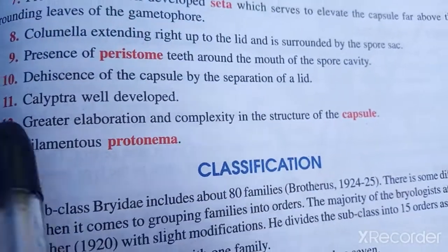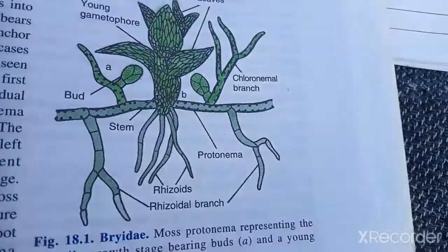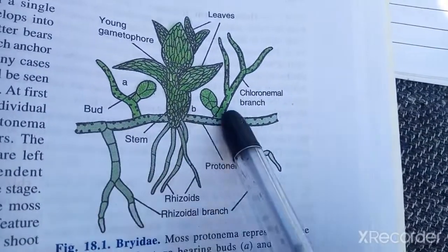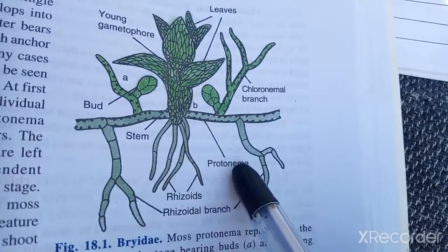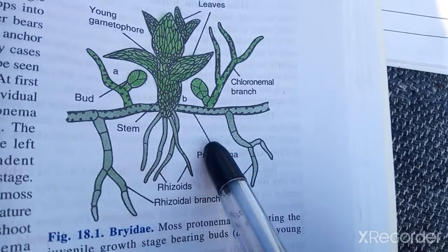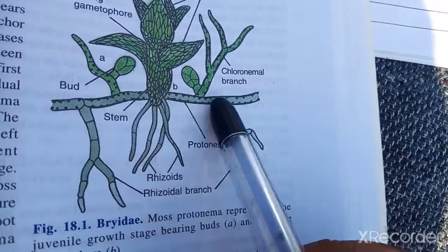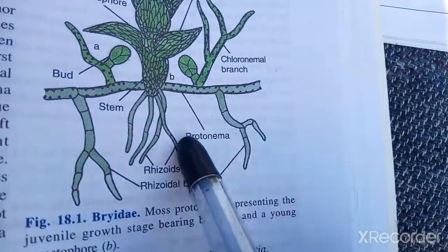Next is the filamentous protonema. A filament that is green in color is called protonema. When fully grown, this green branched system of filaments is called protonema.